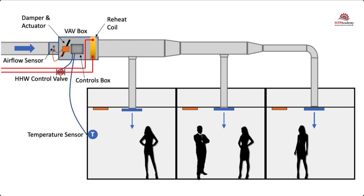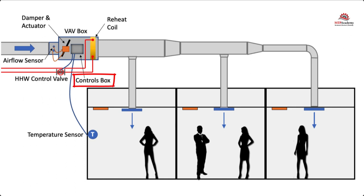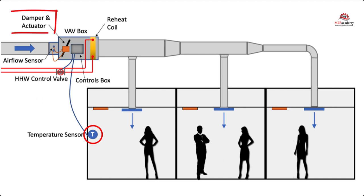The VAV box has a damper at its inlet moved by an actuator that is controlled by the controller, which takes its command from a temperature sensor. The process is very simple. When the temperature sensor in the space calls for cooling, it sends a command to the VAV box controller, which then adjusts the supply air flow rate. The adjustment is done by an actuator — which could be electric, pneumatic, or DDC; everybody's going to DDC — and it rotates the VAV box inlet damper open or closed in increments to satisfy the space requirement.